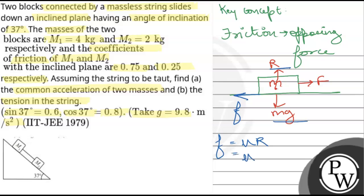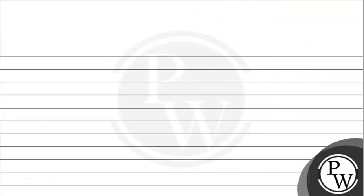As we can see R equals mg, so frictional force f is coefficient of friction mu times mg. Now let's say this is an inclined plane and angle of inclination is 37 degrees. Two blocks are attached like this.